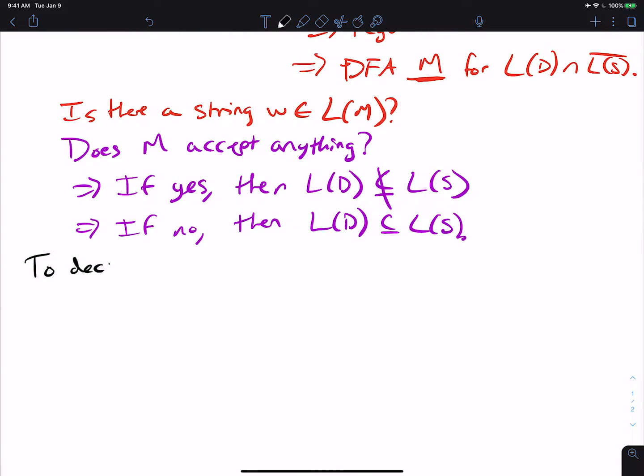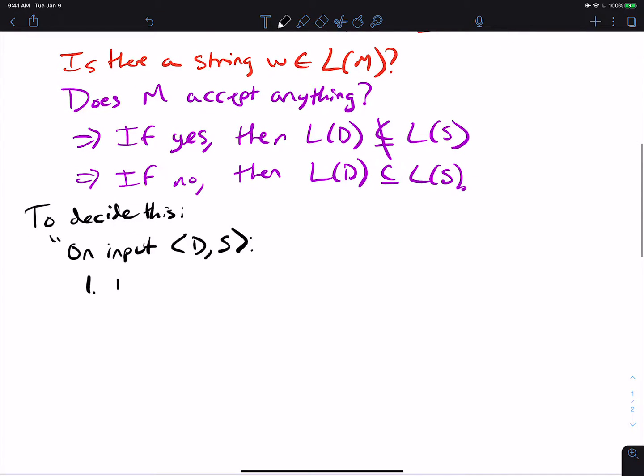So to decide this, what we have to do is we're given input two DFAs, D and S. Then what we do is form the DFA M from D and S such that the language of M is the language of D intersection L of S complement. So this is by the product construction.